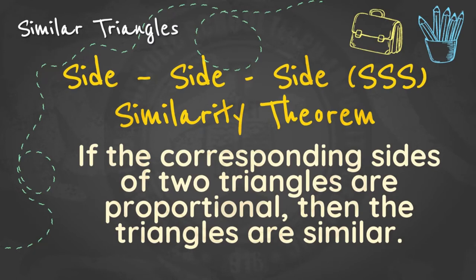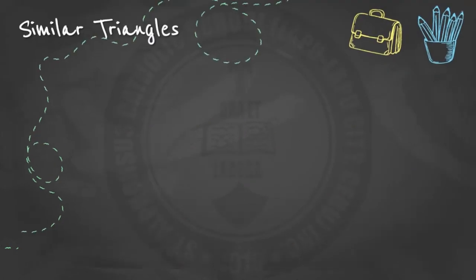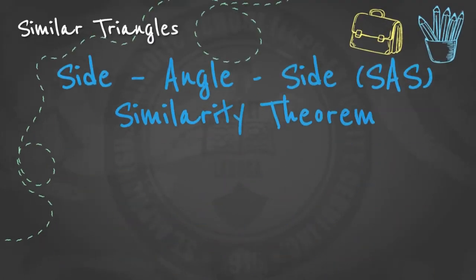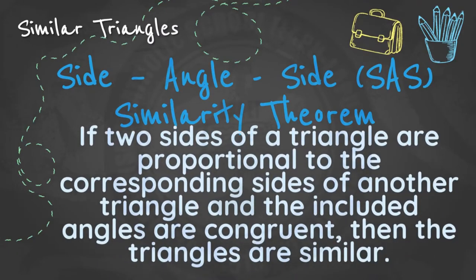We also have the Side-Side-Side or SSS similarity theorem: if the corresponding sides of two triangles are proportional, then the two triangles are similar. We also have the Side-Angle-Side or SAS similarity theorem.